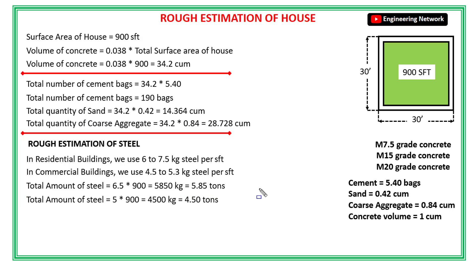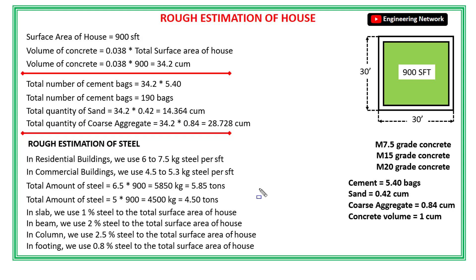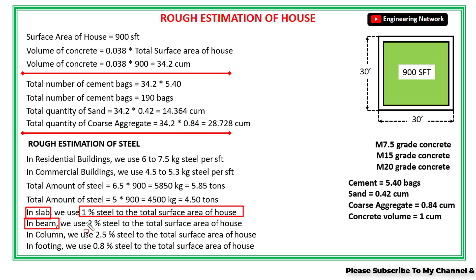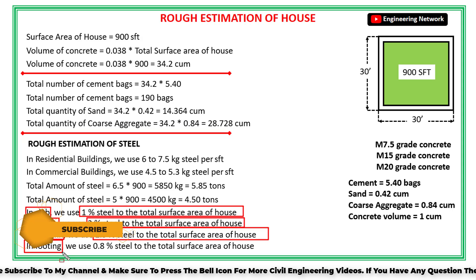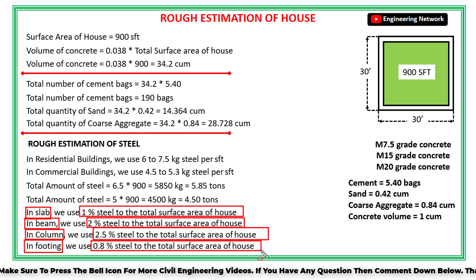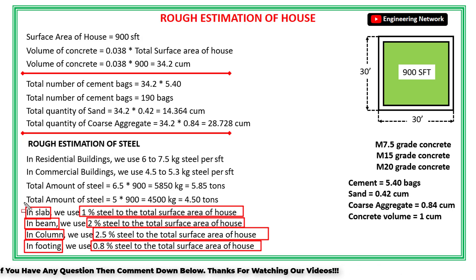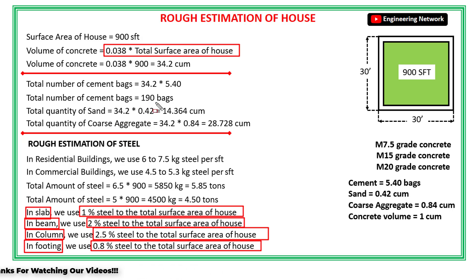Now if you want to find the amount of steel in only a slab, beam, or column, we also have thumb rules for those. For slab, we use 1% steel of the total surface area. For beam, we use 2% steel. For column, we use 2.5% steel. And for footing, we use 0.8% steel of the total surface area. If you remember these thumb rules, you will easily find the amount of steel in any type of building or house.